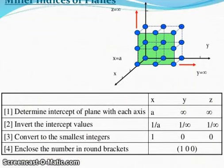Miller indices of planes you can see in this picture. Determine the intercept of plane with each axis: x = a, y = infinity, and z = infinity. Invert the intercept values: 1/a, 1/infinity, 1/infinity. Convert to the smallest integers: 1, 0, 0. Enclose the numbers in round brackets: (1, 0, 0).